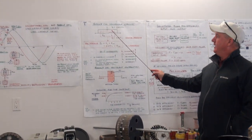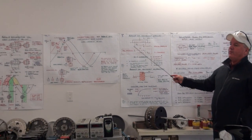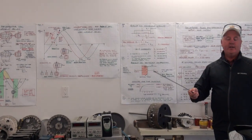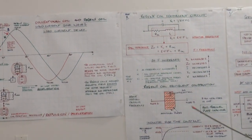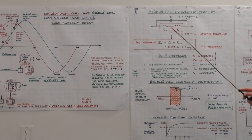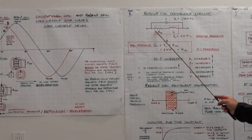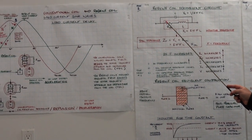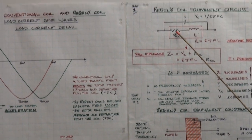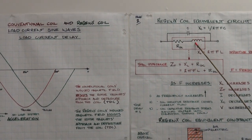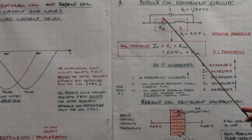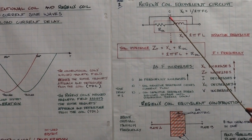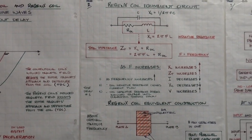This is the equivalent circuit for an inductor. A coil is an inductor — all of these coils are inductors. A coil basically has DC resistance, it has inductance, and in parallel with this is capacitance.